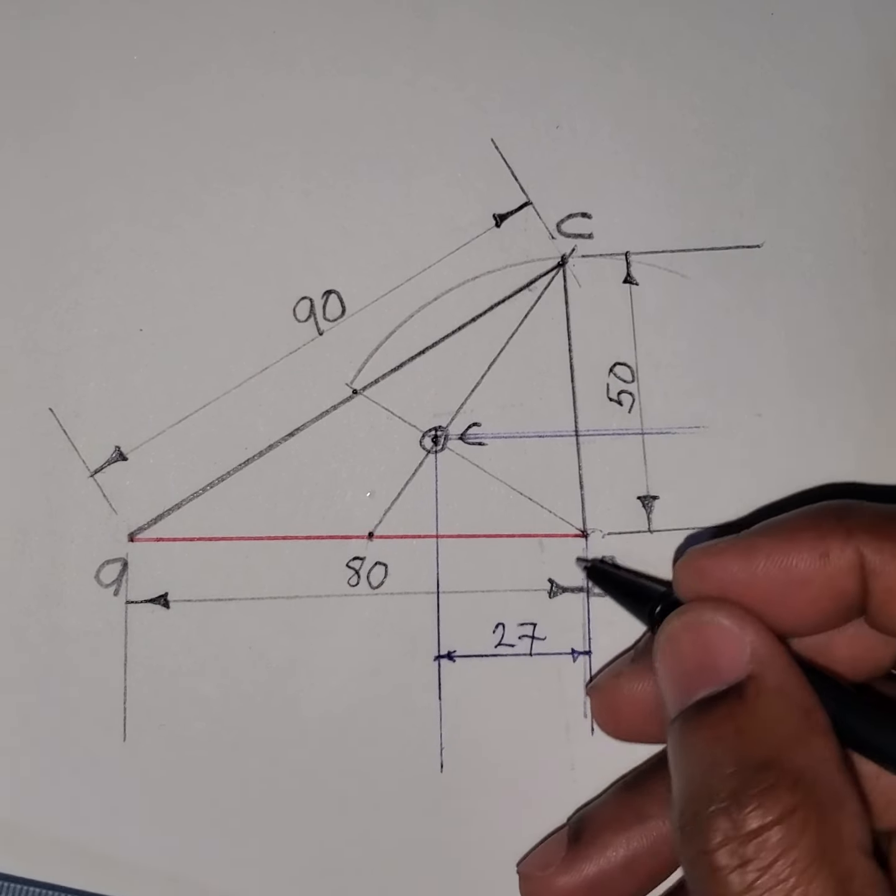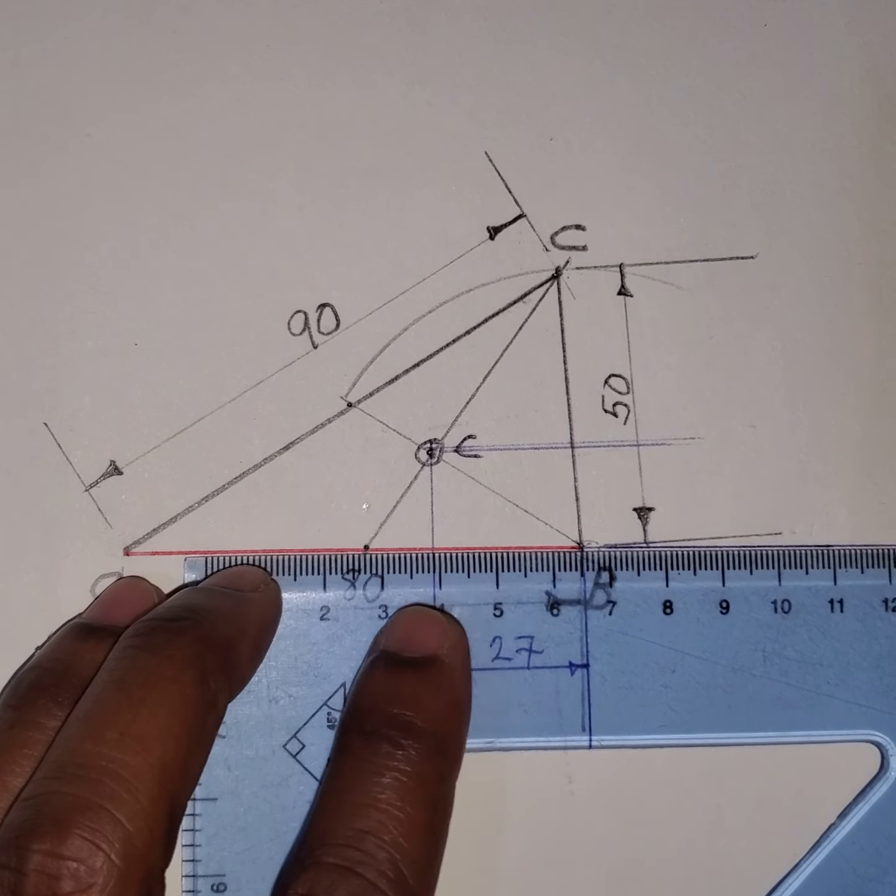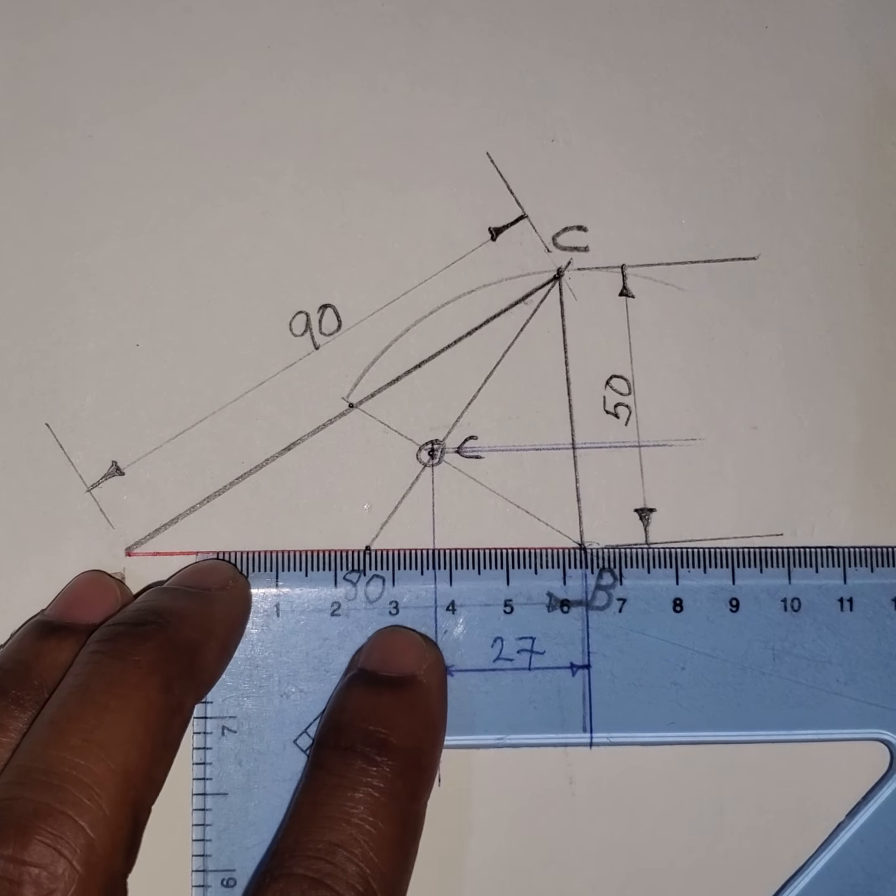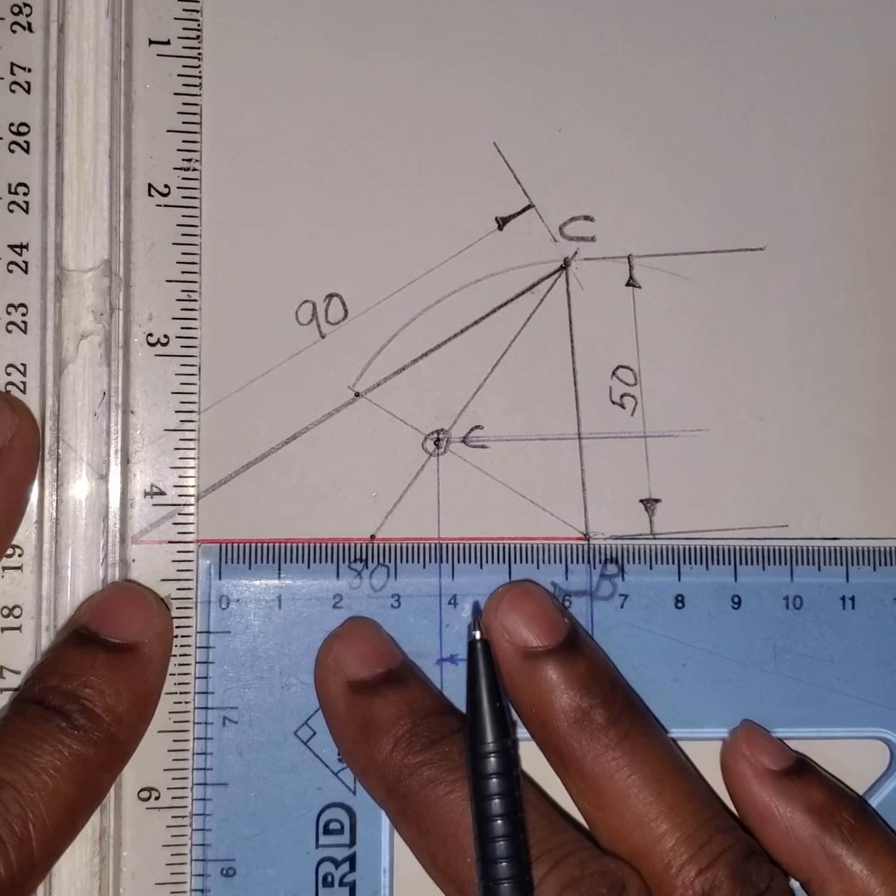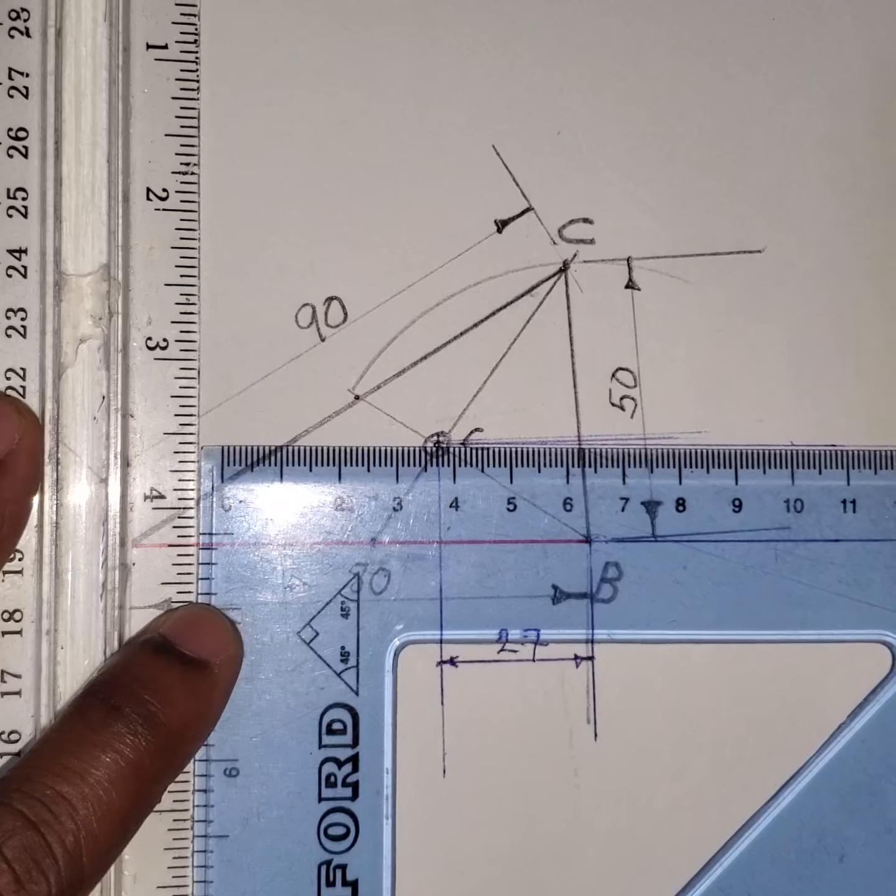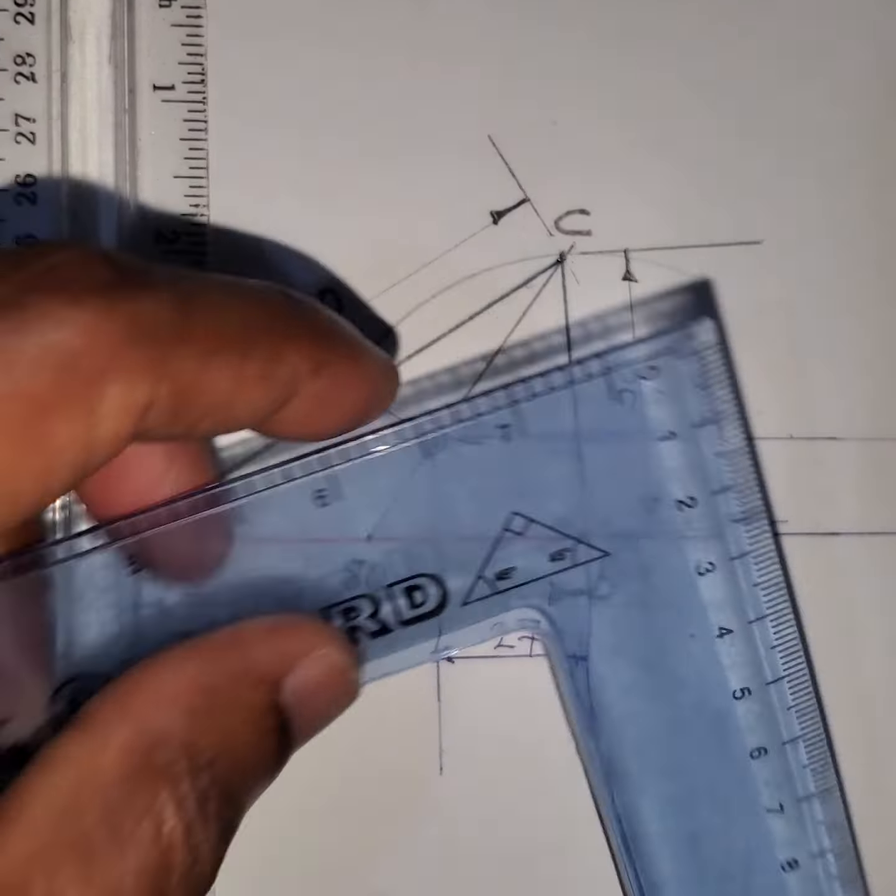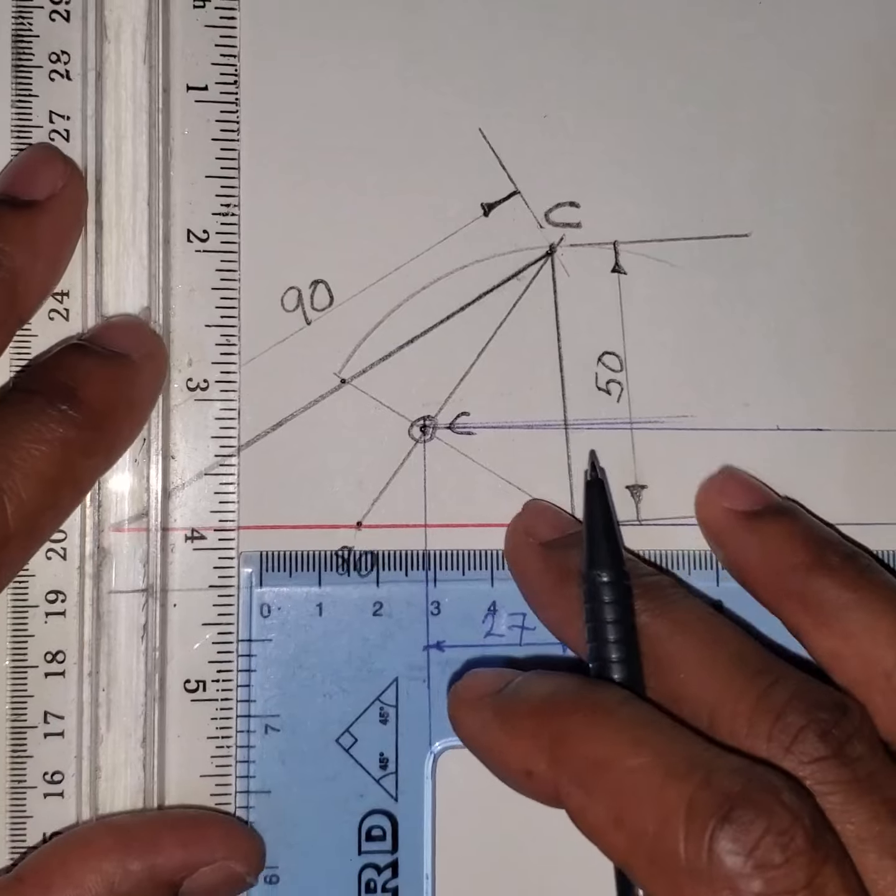On the y I would need to draw a line parallel to this. And this would have been the distance. Let me just check to ensure this is correct.